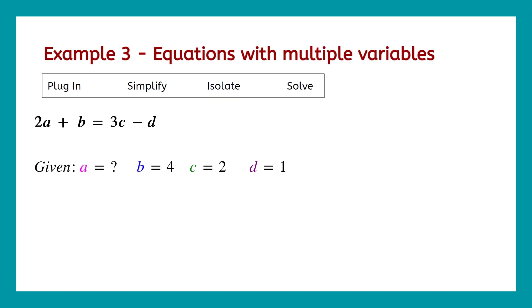One more example problem. This one is for equations with multiple variables. And we're going to plug in, simplify, isolate, and solve. Here, we're told 2a plus b equals 3c minus d. And look at all we're given. We're told that b is 4, c is 2, and d is 1. The only thing we don't know is a. And that is another important rule in algebra. To be able to solve a problem, we have to have all the variables but one. Just one unknown variable.